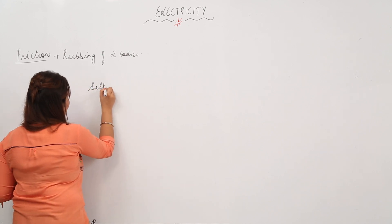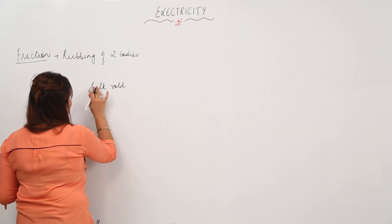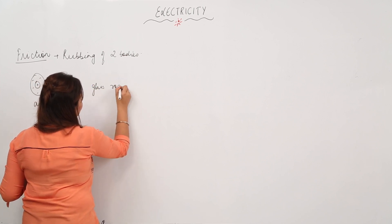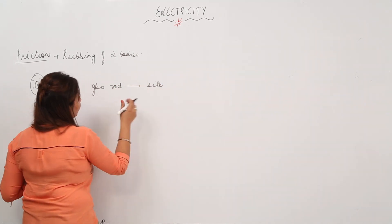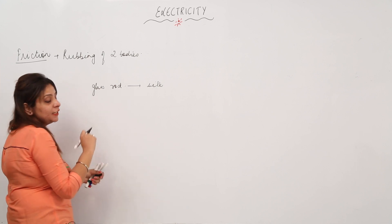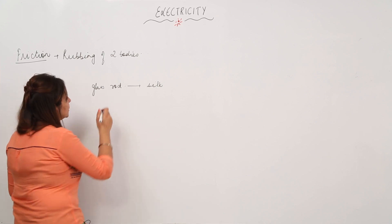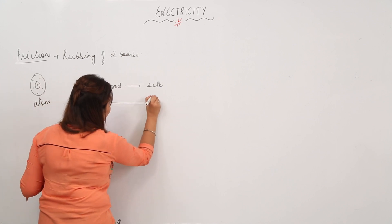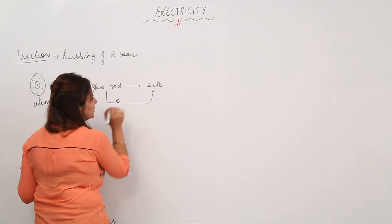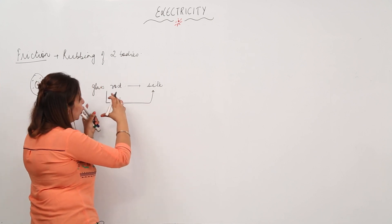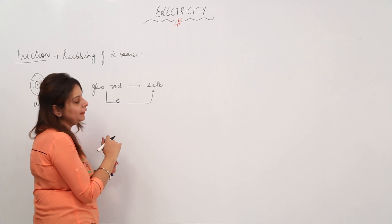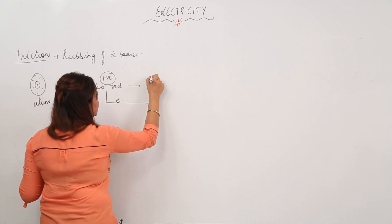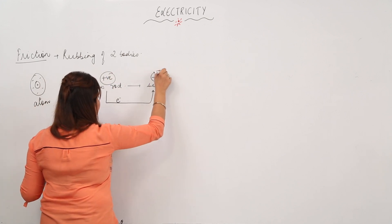Suppose I take a glass rod and rub it with silk. When we rub both of them, there is friction, which leads to the production of electricity. What happens is the atoms of the glass rod lose an electron — these electrons flow from the glass rod to the silk. So the glass rod is losing electrons and the silk is gaining them.